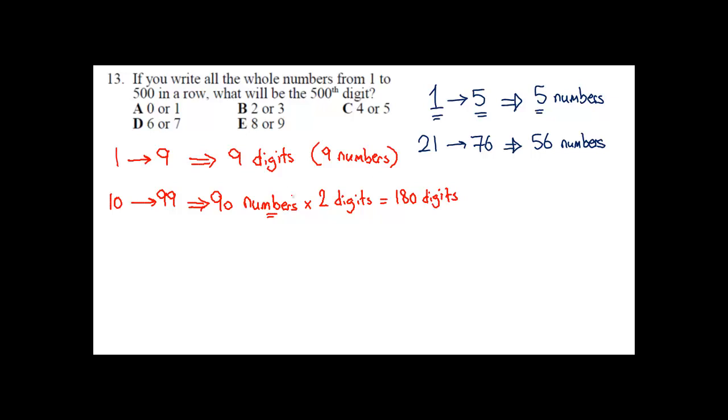So, so far, I know that from 1 to 9 gives me 9 digits. From 10 to 99 gives me 180 digits. Then what? Let's continue.